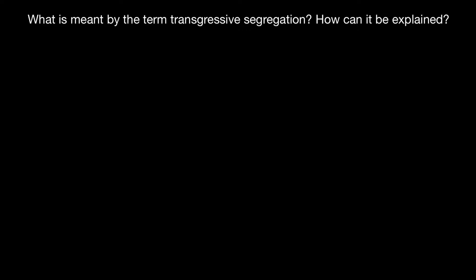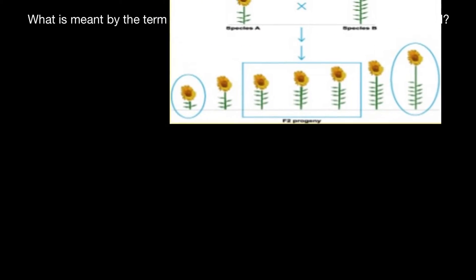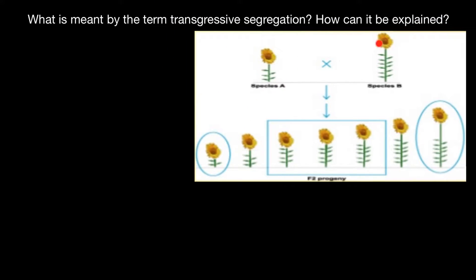Hello and welcome to Nikolai's genetics lessons. In this video I'm going to talk about what is meant by the term transgressive segregation and how it can be explained. Please take a look at this picture — we have one parent here, another parent here, and if we compare the sizes we expect that the progeny would be intermediate in size, a blend of their parents. But sometimes in the progeny we can see not only the phenotypes of the parents or a blend of them, but extreme phenotypes that we cannot see in the parental generation.